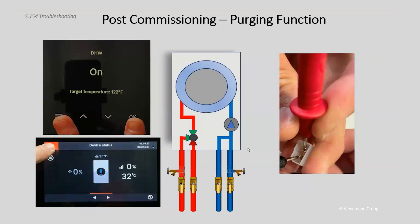Post commissioning — if I just finished a retrofit, maybe added some baseboard or replaced a system pump and had to drain the system down a bit, now I want to get the pressure back up. I don't have to go back into commissioning. I can activate these functions using what we call actuator tests with both boilers. With the 100, make the 'V' with your fingers across the OK and menu keys. With the 200, push the menu key and get into service.